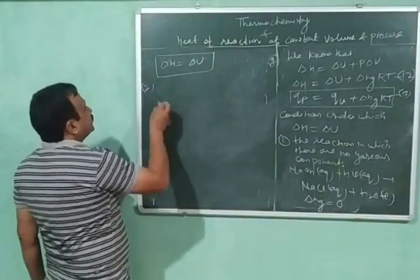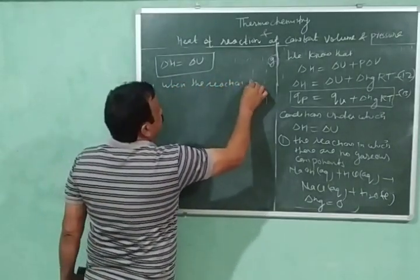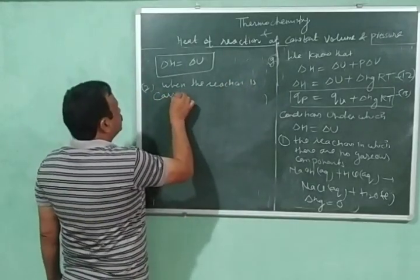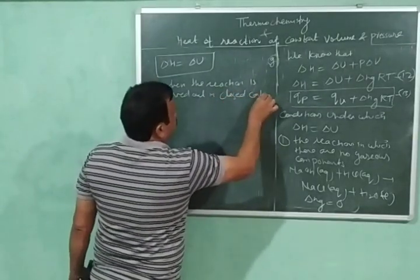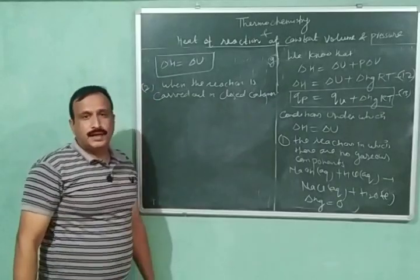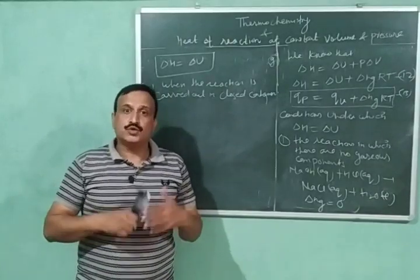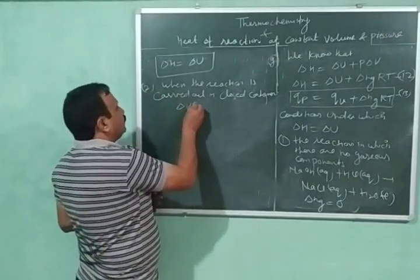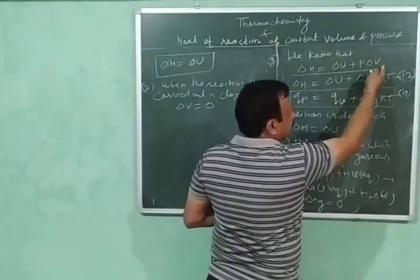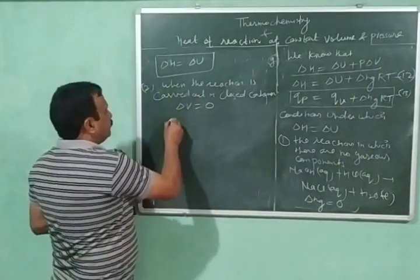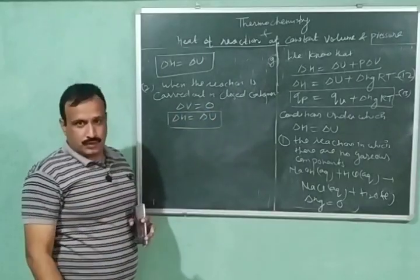The second condition is when the reaction is carried out in a closed container. In a closed container, there is no change in volume, so ΔV = 0. When ΔV = 0, PΔV = 0, and therefore ΔH = ΔU.